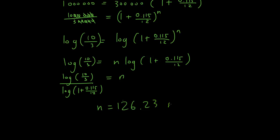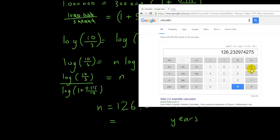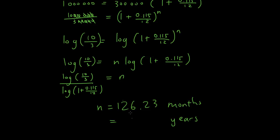So N equals 126.23 months. If they want the answer in years, divide by 12 to get 10.519, which rounds up to 10.52 years. That's the answer — thanks for watching, see you next time!